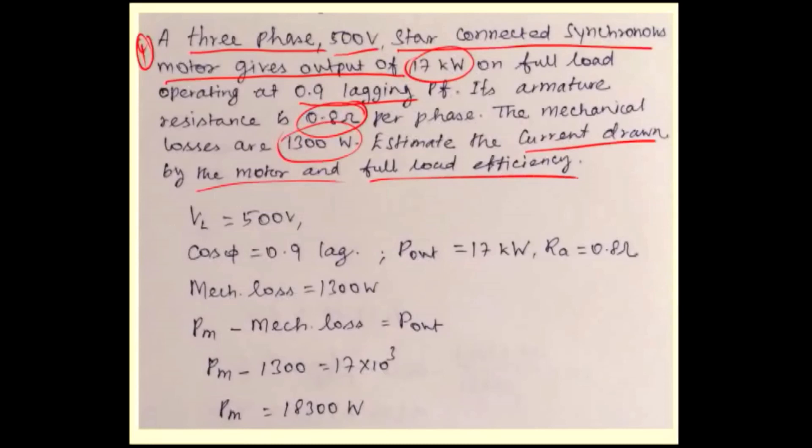This is another type of problem. The supply voltage is 500 volts. Star connected synchronous motor means the voltage given is line voltage because normally they will give the voltage between any two lines. In star connected, between two lines is line voltage. So line voltage VL is 500V, power factor cos φ is 0.9 lagging.